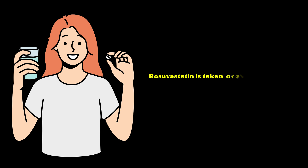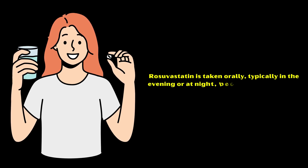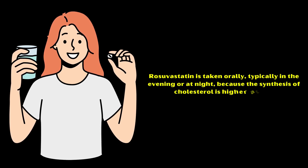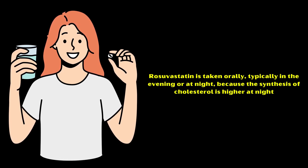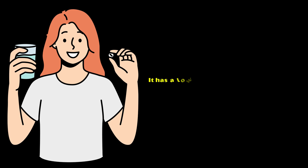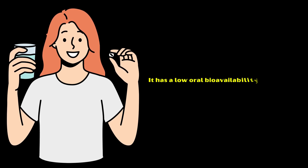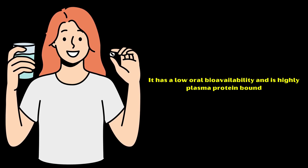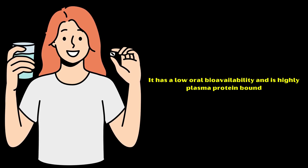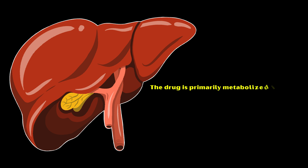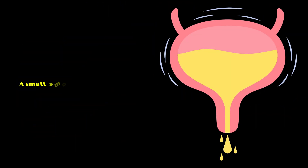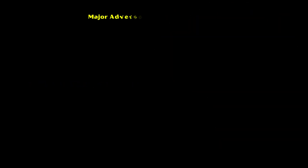Rosuvastatin is taken orally, typically in the evening or at night, because the synthesis of cholesterol is higher at night. It has a low oral bioavailability and is highly plasma protein bound. The drug is primarily metabolized in the liver and excreted unchanged in feces, with a small amount excreted in urine.